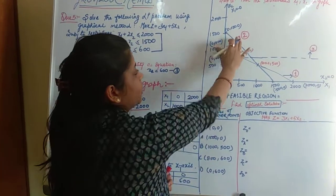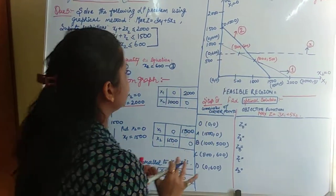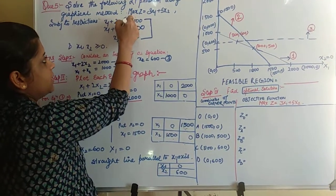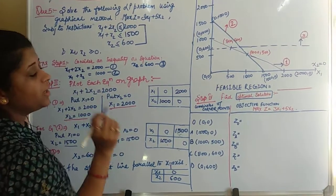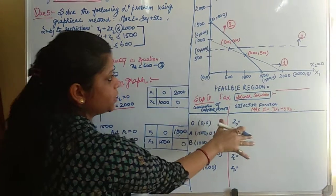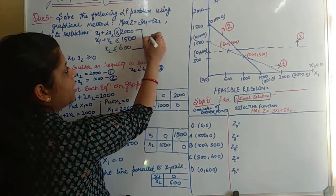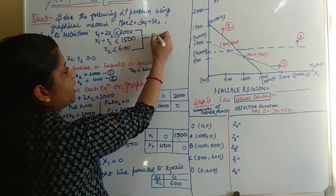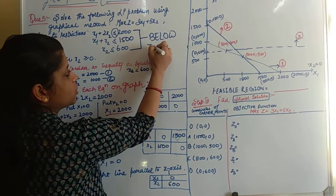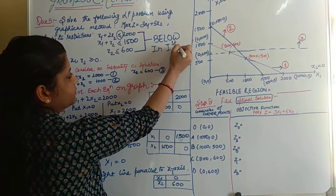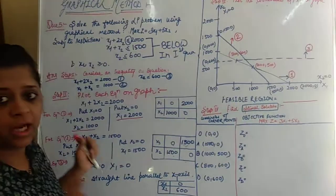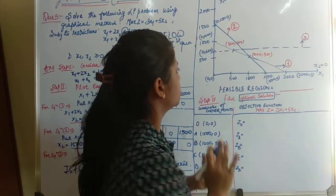Whenever the constraint contains the less-than sign, we have to shade the below region in the first quadrant. We have to shade the below region in the first quadrant for each of these constraint lines.